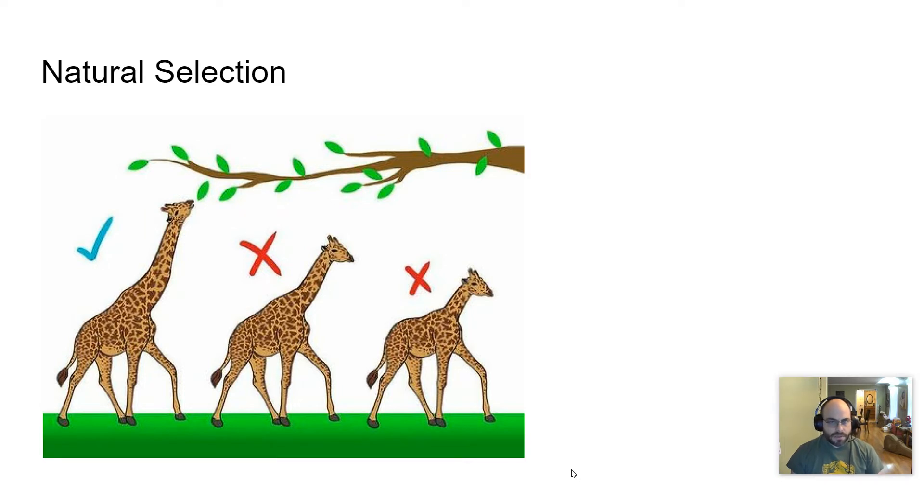So in natural selection, we talked about this picture last time, where you have a giraffe that is taller than the other giraffes. And so the short giraffes that can't reach the leaves will die. The tall giraffe will live, pass on its genes, and so therefore there will be mostly tall giraffes.